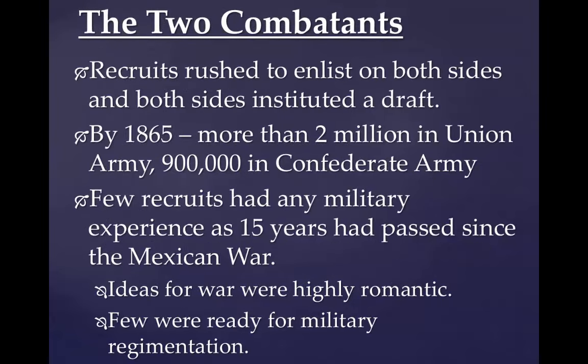On both sides, there was a big rush of recruits enlisting. Both sides would also institute a draft later in the war when enlistments started to drop. By 1865, you had a large number of soldiers who had fought for the Union and the Confederacy — over 2 million Union troops and over about 900,000 Confederate troops, showing the major difference in numbers.